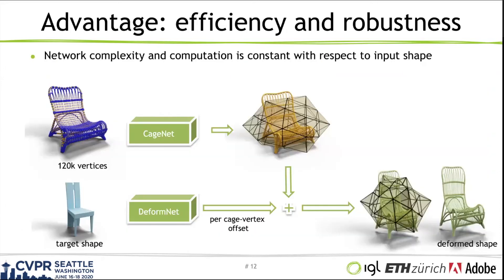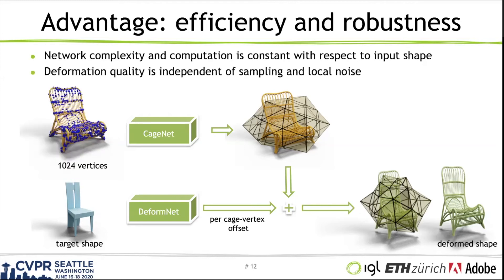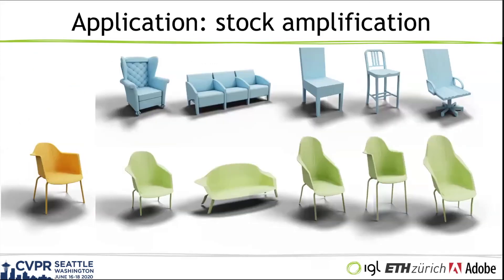Since the deformation is per cage vertex, our network does not scale with the input resolution. Thus, it can handle very complex shapes like this chart shown below. Furthermore, since the network needs to focus only on global information, it is also robust to noisy and partial inputs. We can use our method to generate new variations of shapes, a practical tool for 3D stock amplification and design.